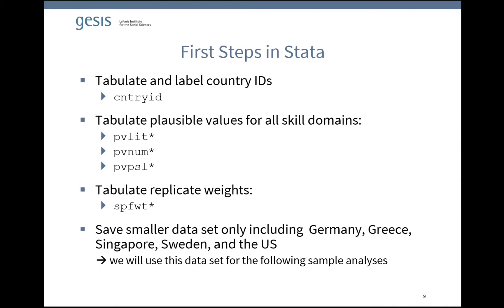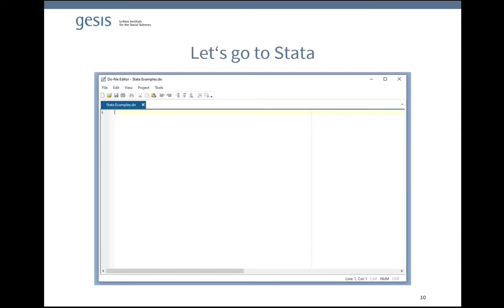This slide gives an overview of the first steps we will perform on the data. First, we will look at the country IDs and tabulate the countries. Then we will look at the 10 plausible values for each skill domain as well as the weighting variables. Finally, we will save a small dataset only including Germany, Greece, Singapore, Sweden, and the United States, which we will use for our sample analysis in the following videos. The reason for using the smaller dataset is that it allows the analysis to progress more quickly. Now let's go to Stata.